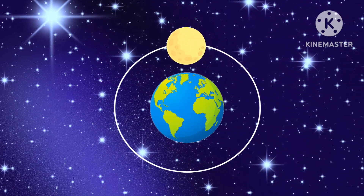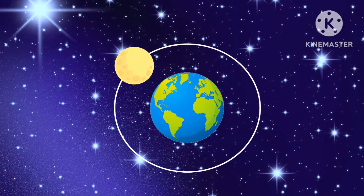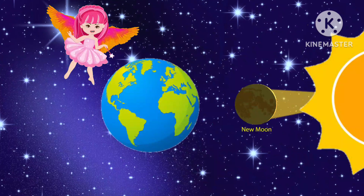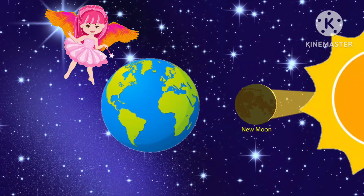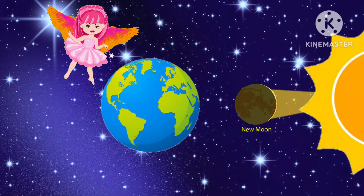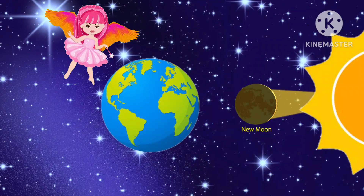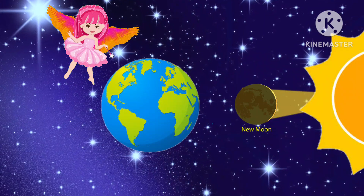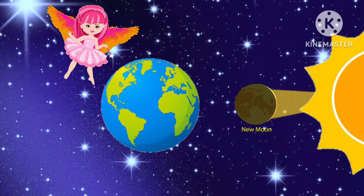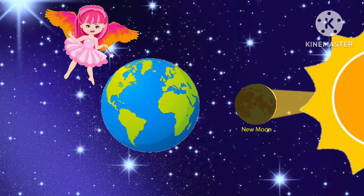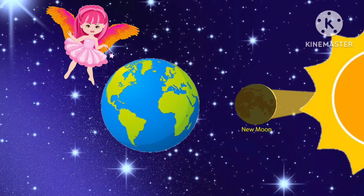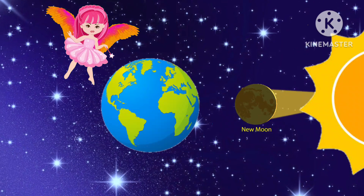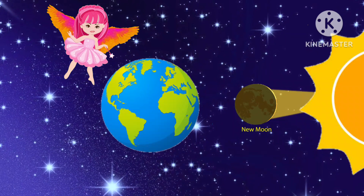We all know that the moon revolves around the earth in a fixed orbit. When the moon is exactly in the middle of the earth and the sun, it becomes invisible in the night sky because the side facing the earth will not get sunlight. This phase is called new moon.